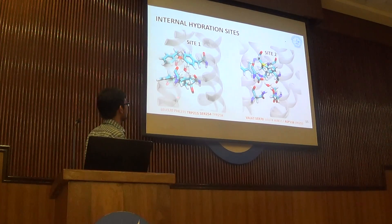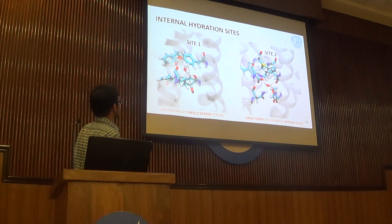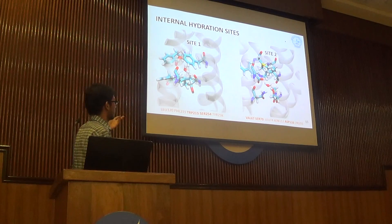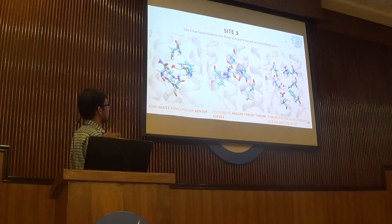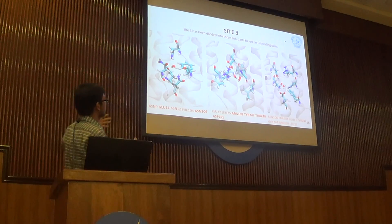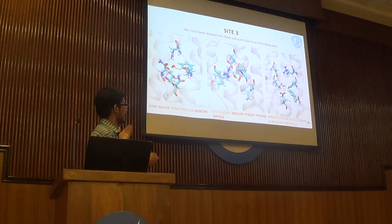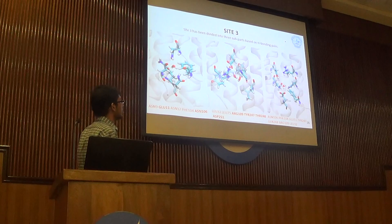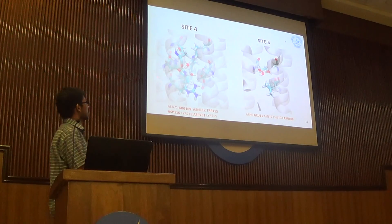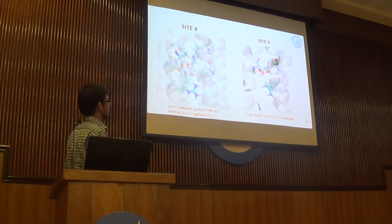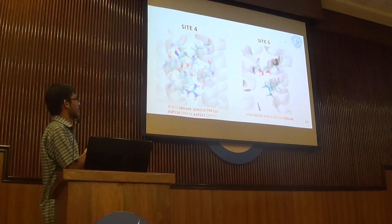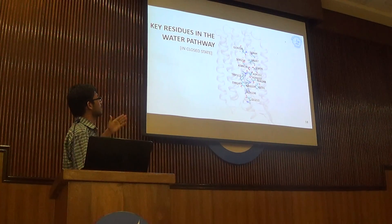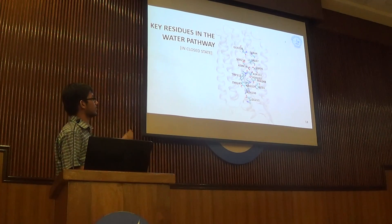The sites show a variety of hydrogen bonding patterns. Site 1 shows two hydrogen bonds. In site 2, there are three hydrogen bonds with the residues. For site 3, we divided it into three parts based on hydrogen bonding pairs: the first part shows a single hydrogen bond, followed by a double hydrogen bond, followed by a single hydrogen bond again. Site 4 is shown next, followed by site 5, where the water is present in a triple hydrogen bonding state followed by a single hydrogen bonding state. This gives a complete picture of the key residues lining the water pathway in the closed state.